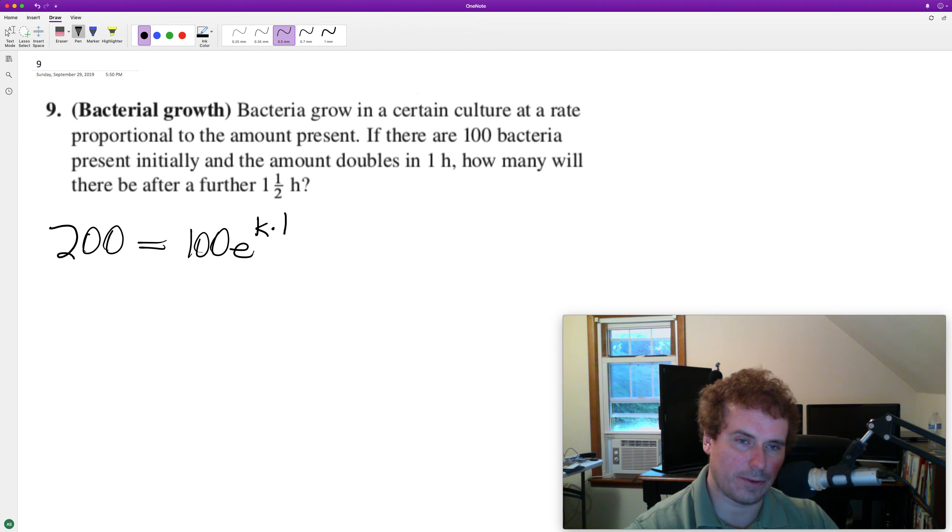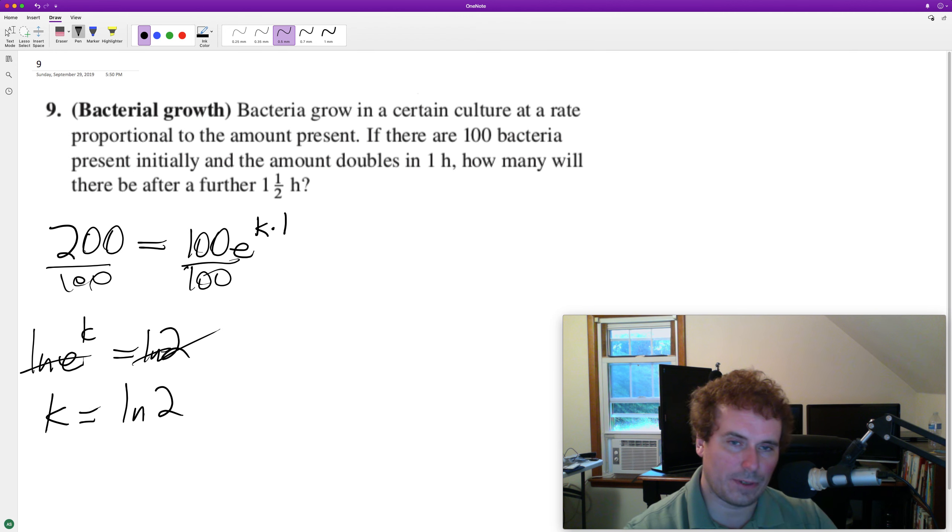We divide through by 100, so we have e raised to k equals 2. Take the natural log of both sides, and we end up with our constant k equals natural log of 2.